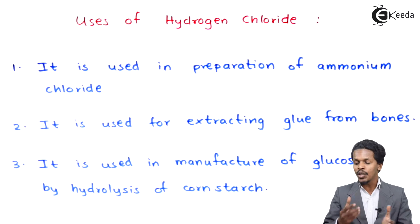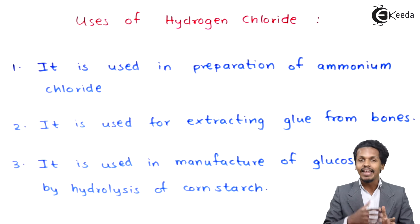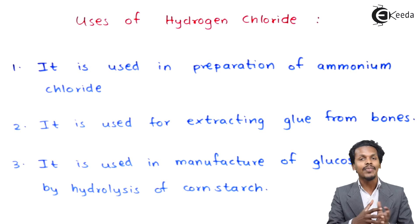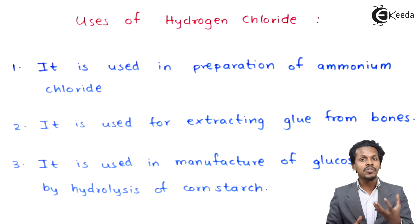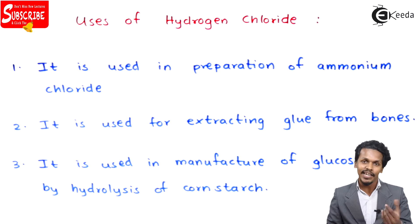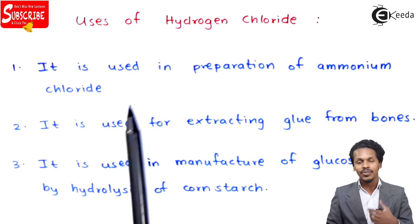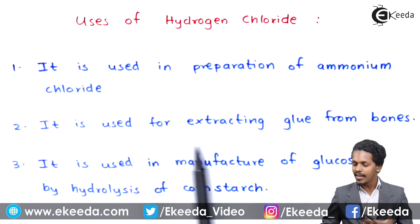Ammonium chloride is a salt that can be obtained whenever NH₃ is treated with HCl. This is how we can obtain ammonium chloride. HCl can also be used in the preparation of chlorine gas, that is Cl₂ gas. This is the first point.